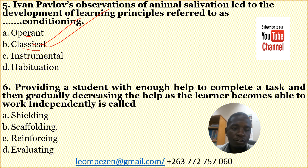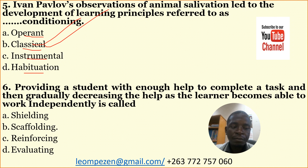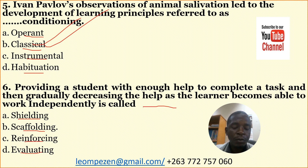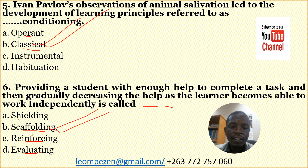Number six: Providing a student with enough help to complete a task and then gradually decreasing the help as the learner becomes able to work independently is called — A: shielding, B: scaffolding, C: reinforcing, D: evaluating. The correct answer here is scaffolding. This is whereby one provides a student with enough help to complete a task and then gradually decreases help as the learner becomes able to work independently.